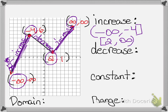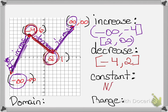For decreasing: as you can see I am decreasing right here, so I'm only looking at the x values — that'll be from negative 4 to 2. And as you notice, I'm not constant anywhere on this graph, so I'll just say N/A.